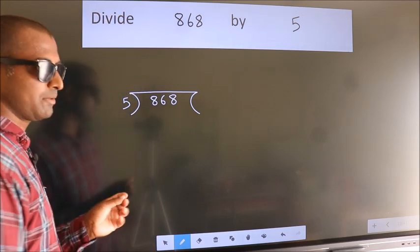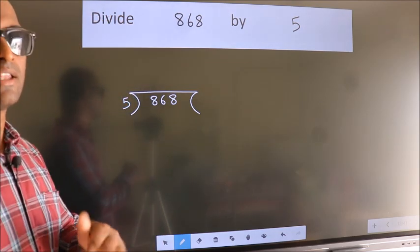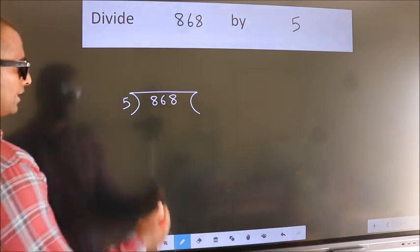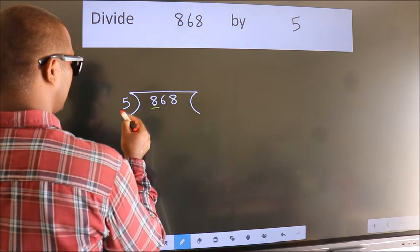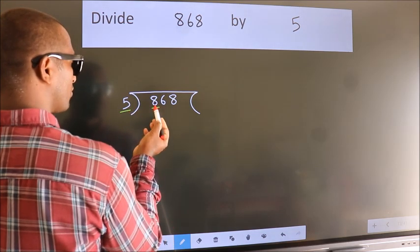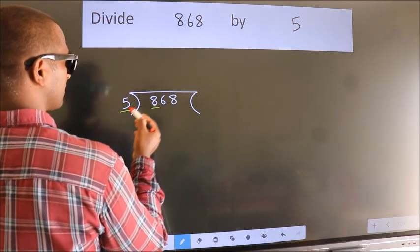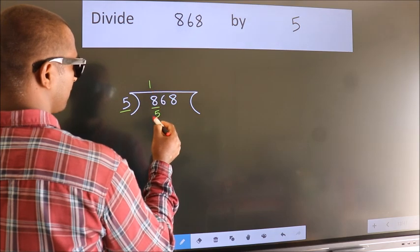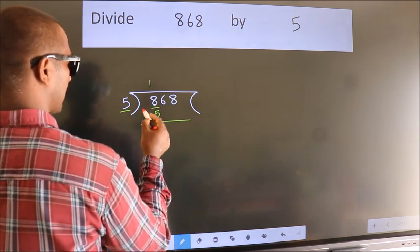This is step 1. Next, here we have 8, here 5. A number close to 8 in the 5 table is 5 once, which is 5. Now we should subtract. We get 3.